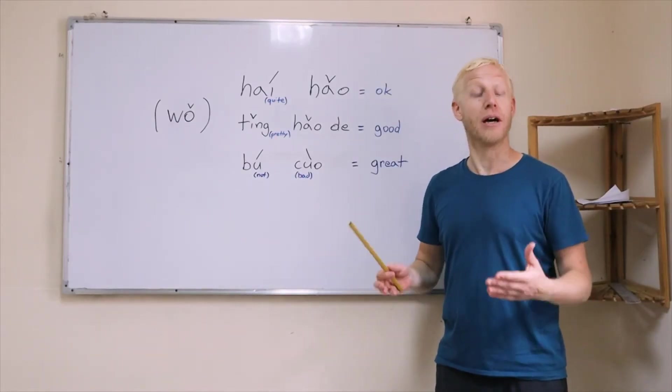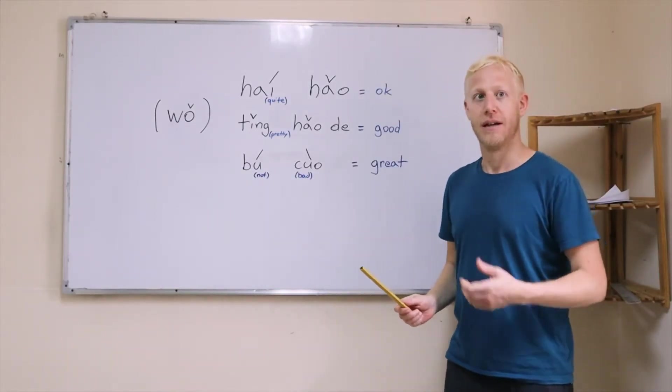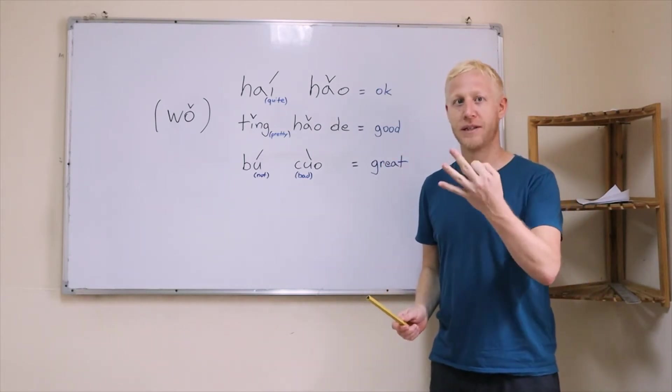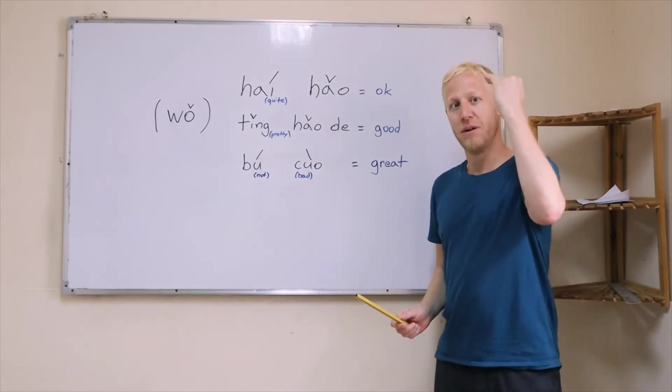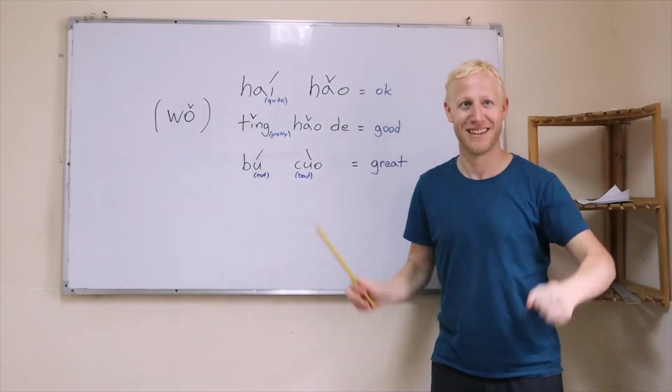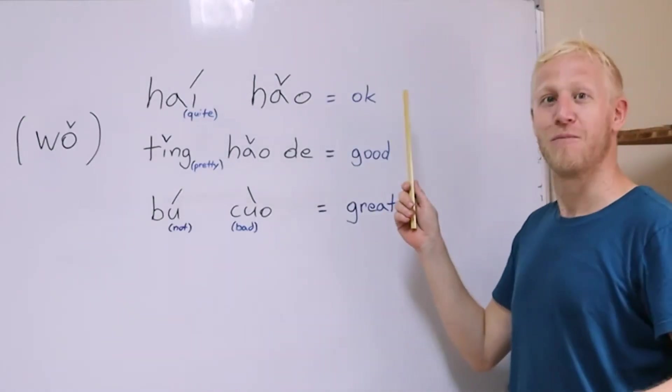So here will be what you're asking about and then 怎么样. So to answer the question how are you in Chinese, today I want to show you three different ways how to do it, by different gradations of greatness. Starting with okay.